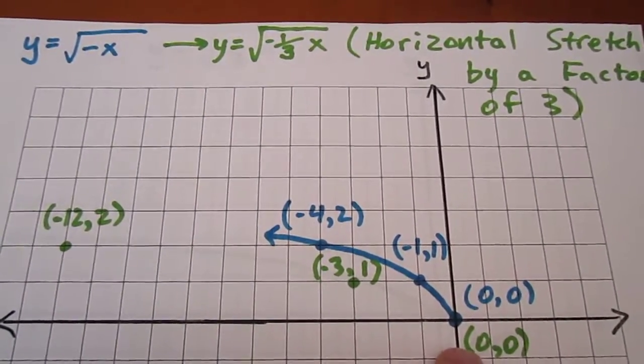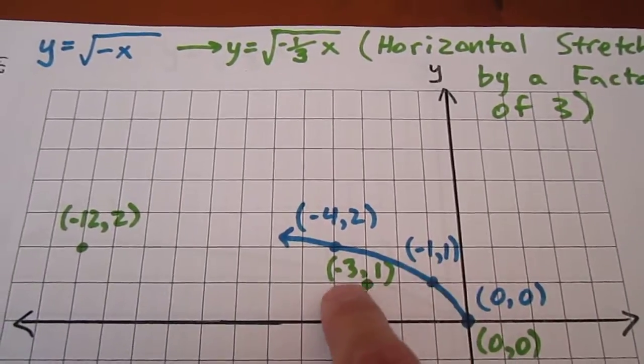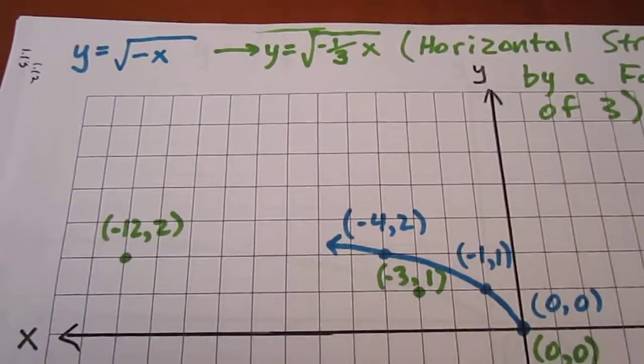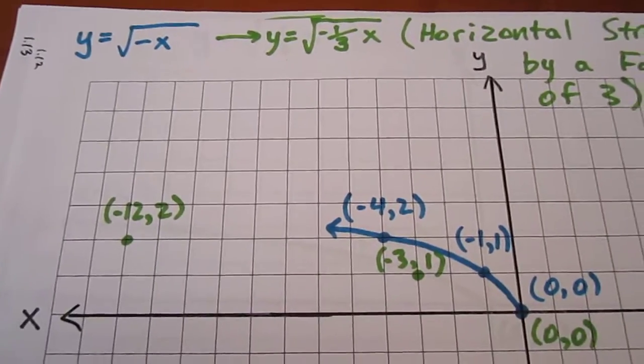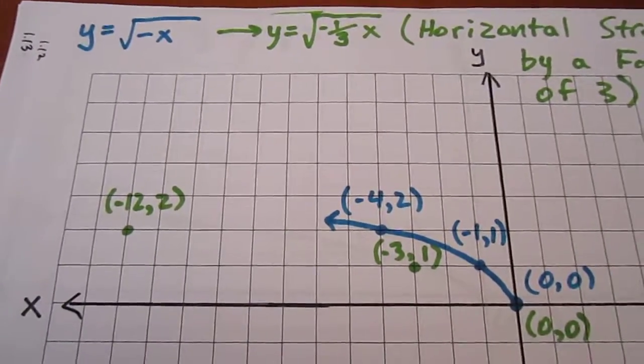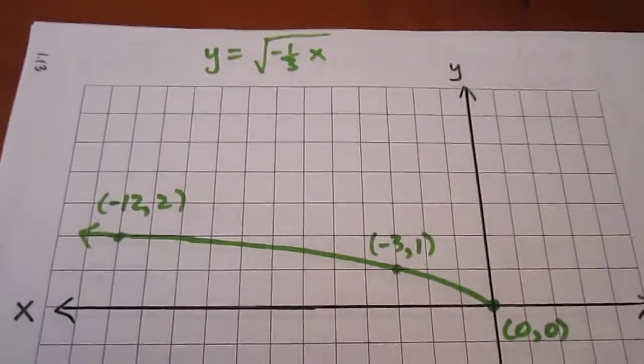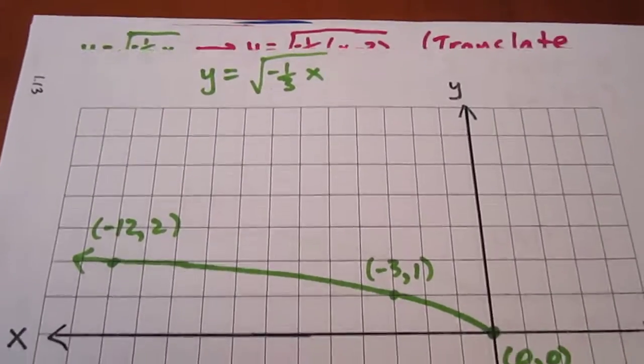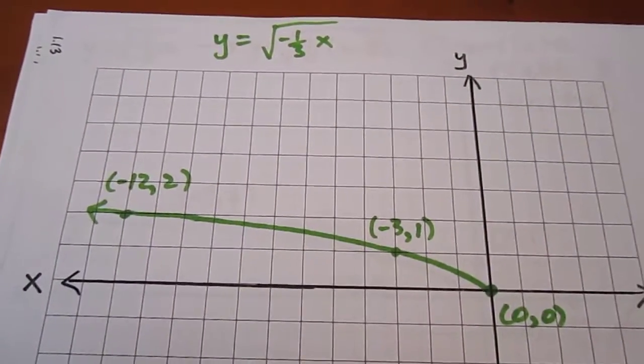Well, what that does is it stretches us out horizontally. So we multiply each x-coordinate by 3. So 0, 0 stays at 0, 0. But negative 1, for instance, will become negative 3, 1. Negative 4, 2 becomes negative 12, 2. Discard that blue curve. We're done with it now and focus on the green. And that is what our curve looks like two transformations into the process.